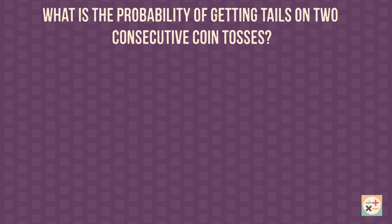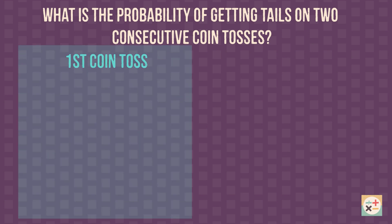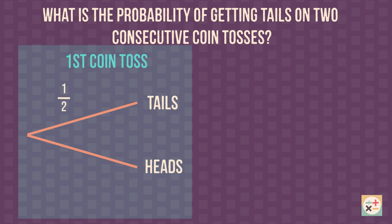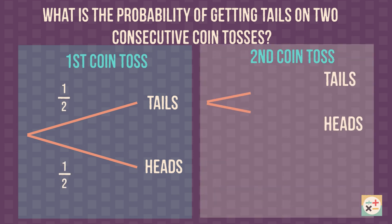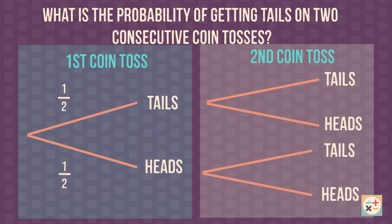For example, if we wanted to draw a tree diagram to show the probability of getting tails on two consecutive coin tosses, it would look like this. The outcome of the first coin toss is displayed in this first column, and the outcome of the second coin toss would be shown in this second column. Notice that we need to write the outcomes of the second coin toss twice — one for each of the two different outcomes we may get on the first coin toss.